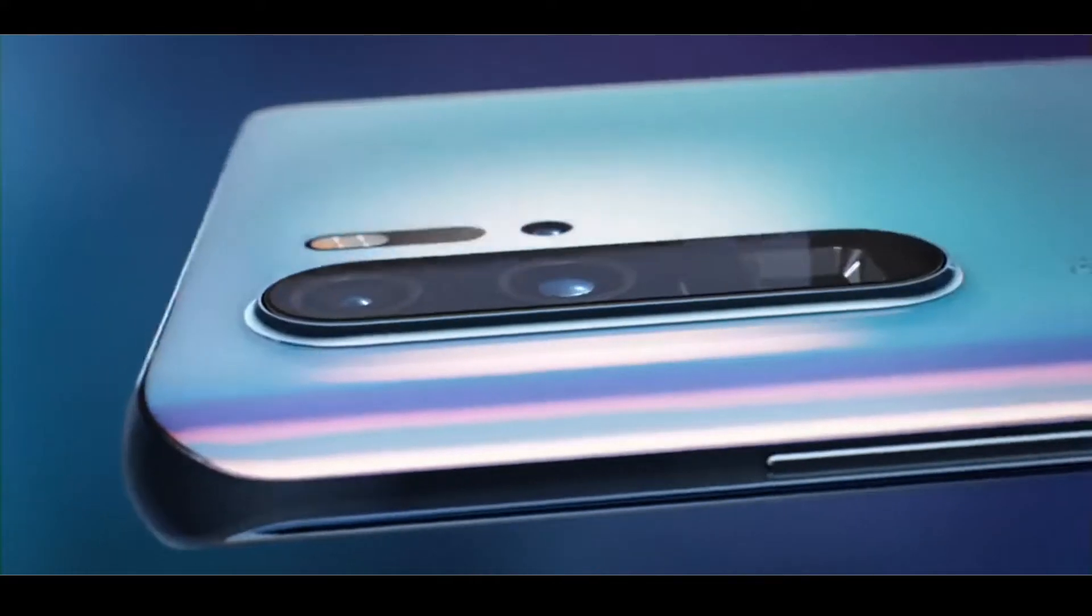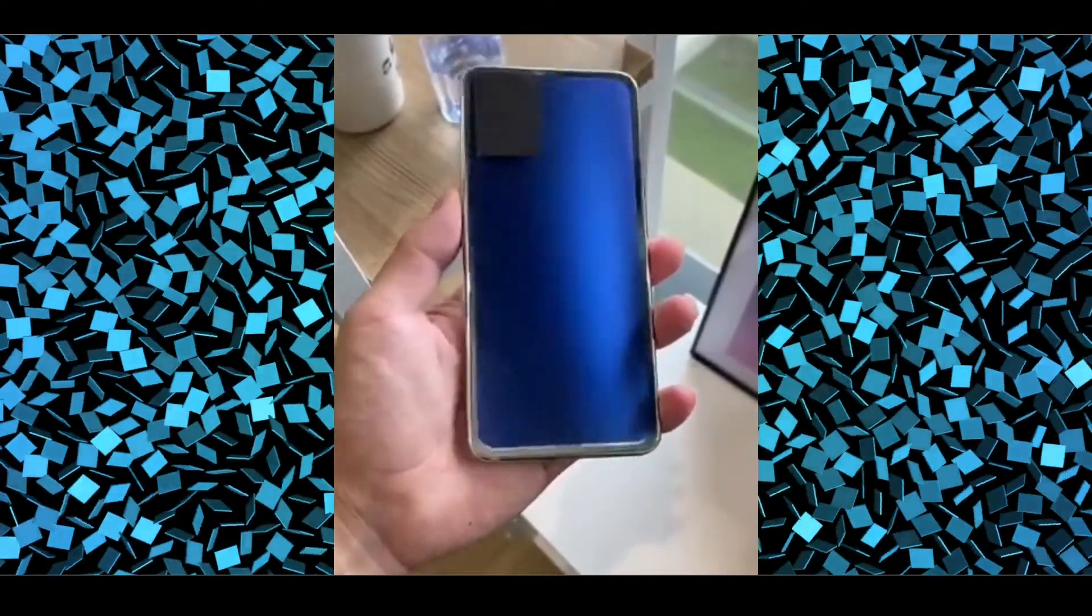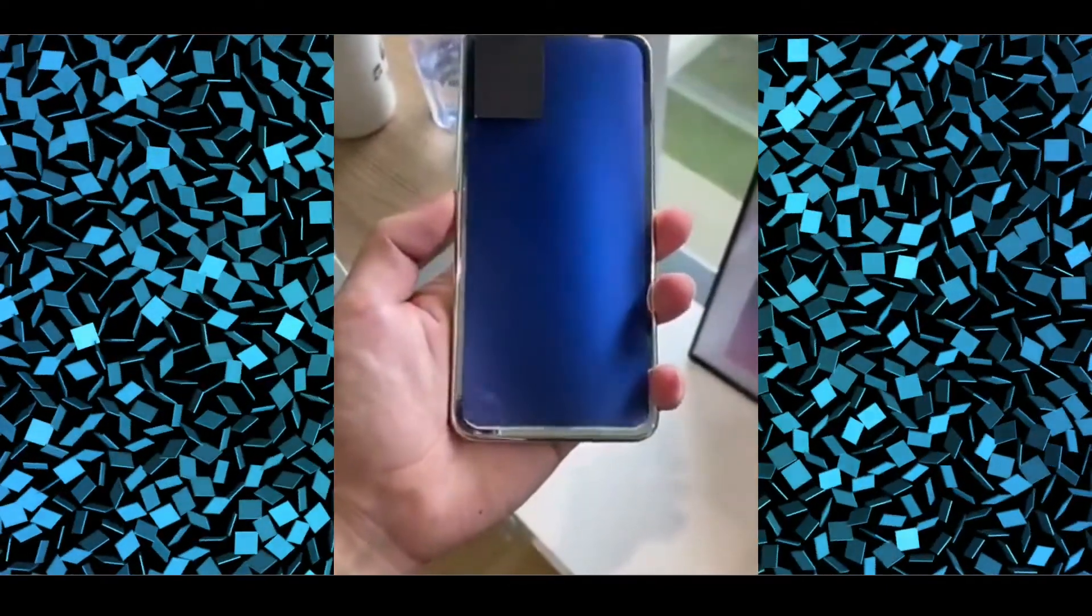But now another Chinese manufacturer is trying to take it to the next level, that's Vivo. They are reportedly working on a phone, or at least a design for the phone, where the back glass can change color at will.